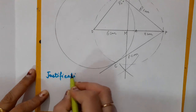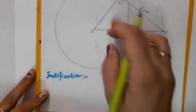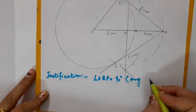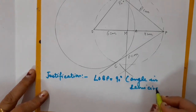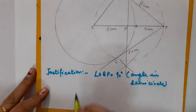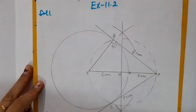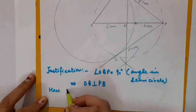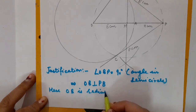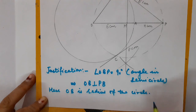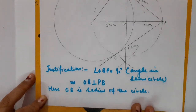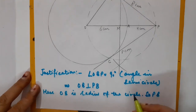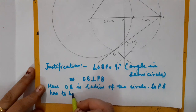For the written justification: angle OBP = 90° — reason: angle in a semicircle. This implies OB is perpendicular to PB. Here OB is the radius of the circle. Since OB is the radius and OB ⊥ PB, it is certain that PB is the tangent to the circle. Similarly, joining O to C, angle OCP = 90° — angle in a semicircle — and OC is the radius, so PC is the tangent.